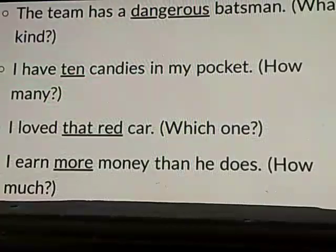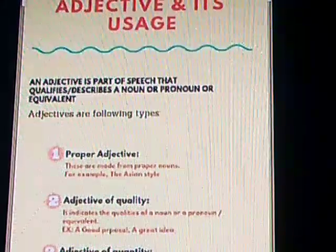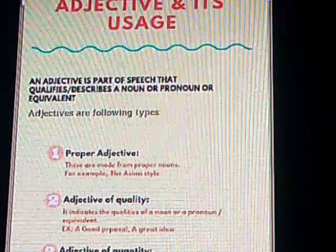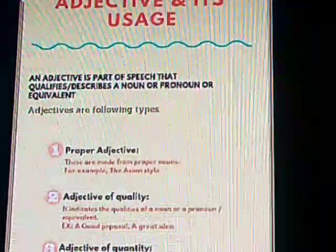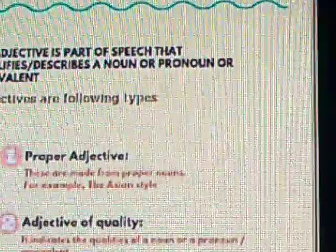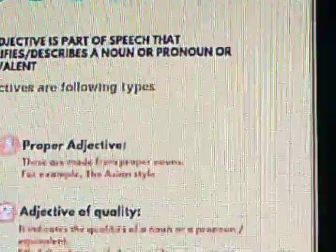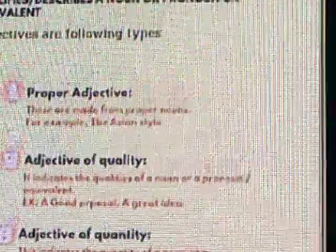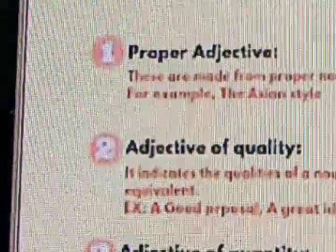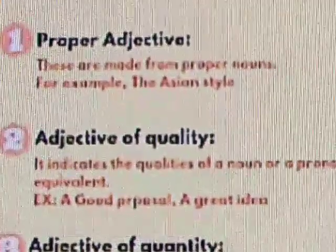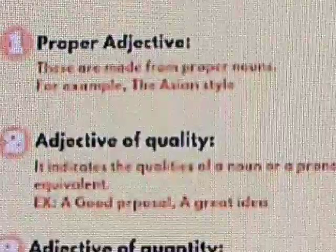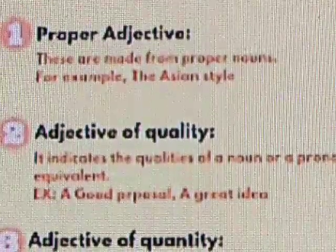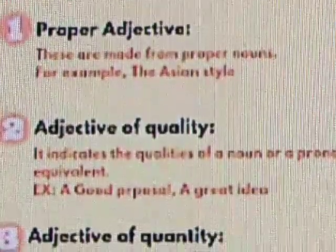Let's learn the types of adjectives. We have eight types. The very first type is proper adjectives. When you go to a restaurant with various styles of food, you won't say give me food cooked in North Indian recipe — you'll simply say North Indian dishes. So instead of saying something in a long summary, you put it into a short simple word, and that is called a proper adjective.